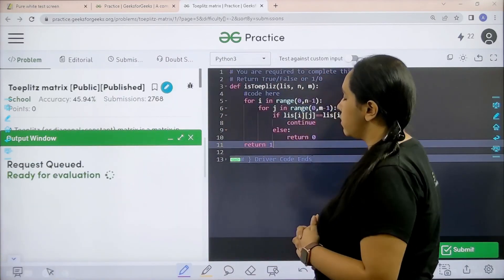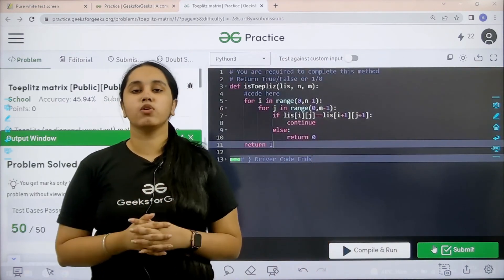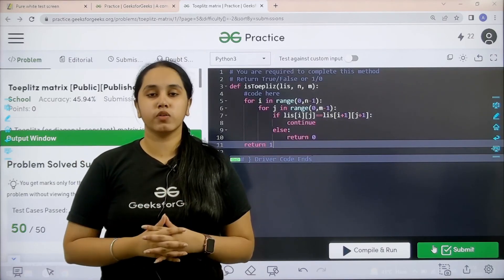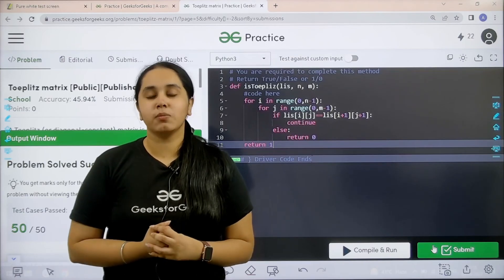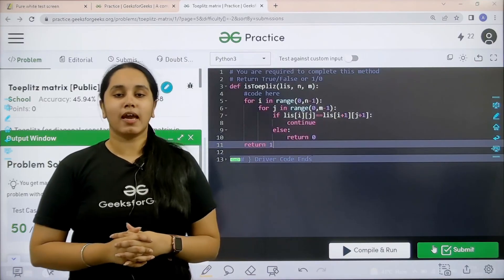And my output is matching with the expected output. So now I would submit the given problem. Let's wait. So the problem is solved successfully. And this is how you solve the practice problem Toeplitz matrix. I hope this video was helpful for you and you guys enjoyed it. If you guys like the video make sure you click on the like button and subscribe our channel and thank you for joining me today. Thank you.